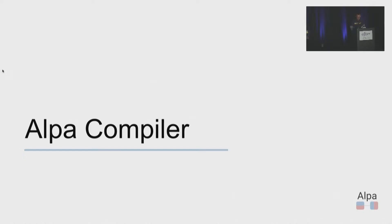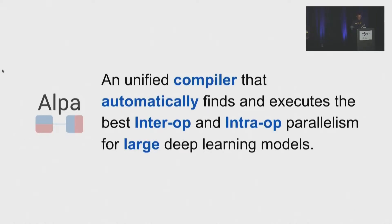So hello, everyone. I'm Zhihao, and I will give you an overview of the Alpa system. So in Alpa project, our goal is to build a unified compiler that automatically finds and executes the best strategy with both inter and intra-operator parallelism for large deep learning models.